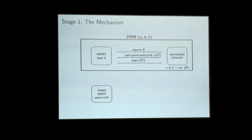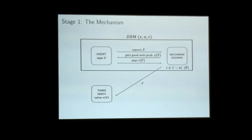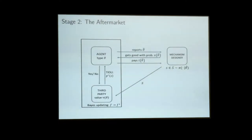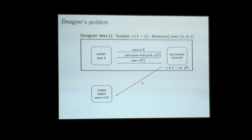The novel part is that now, conditional on the object being allocated, the designer is going to draw a signal S from a distribution pi — this pi is the disclosure that's part of the mechanism — conditional on the report of the agent, and reveal the signal publicly. The second stage of the game is this exogenous aftermarket. The third party observes the signal, updates beliefs according to Bayes' rule, and makes an optimal take-it-or-leave-it offer to the agent to try to purchase the object. The agent can say yes or no. So the goal for the designer is, taking this exogenous aftermarket as given, to optimize over direct mechanisms to maximize a weighted sum of surplus and revenue.